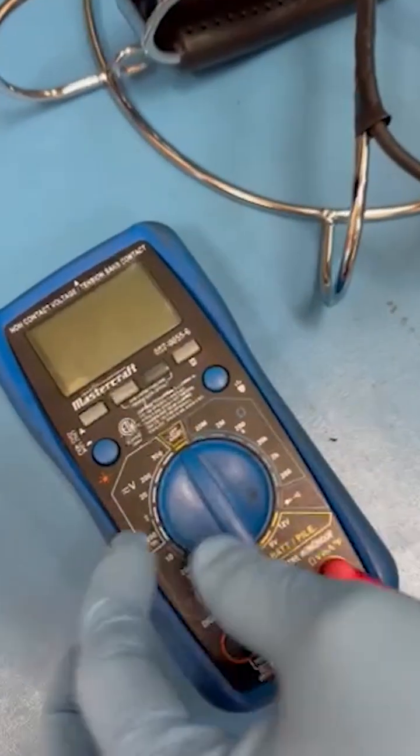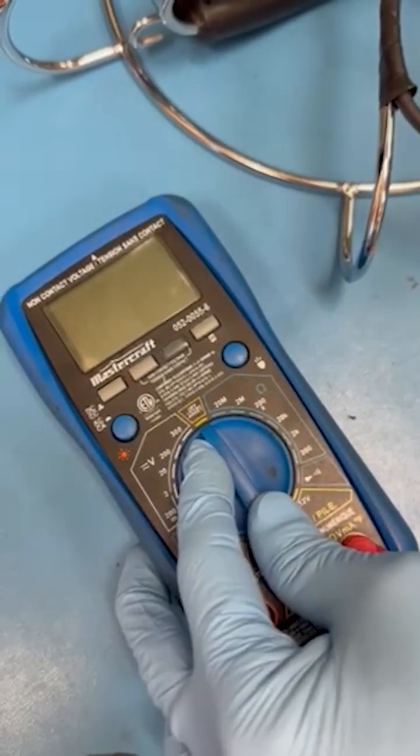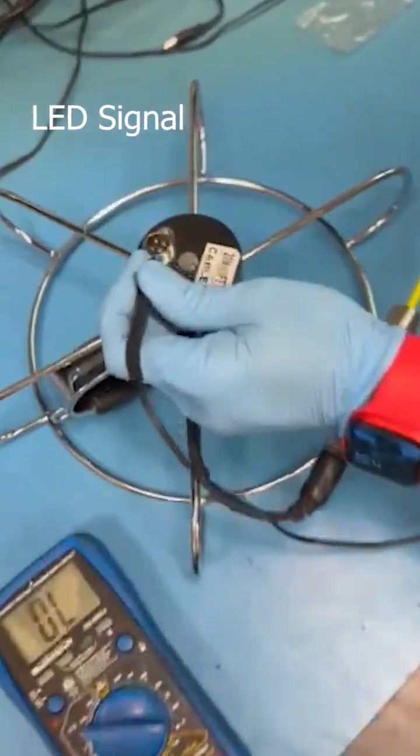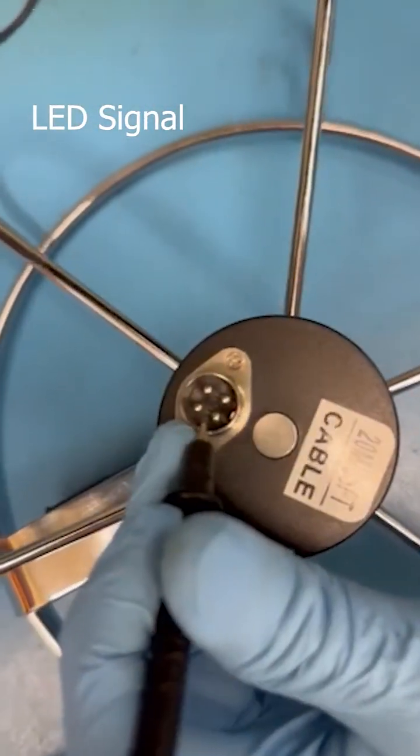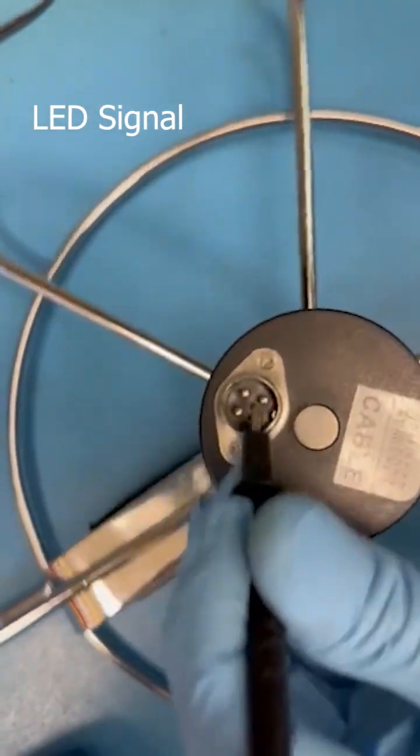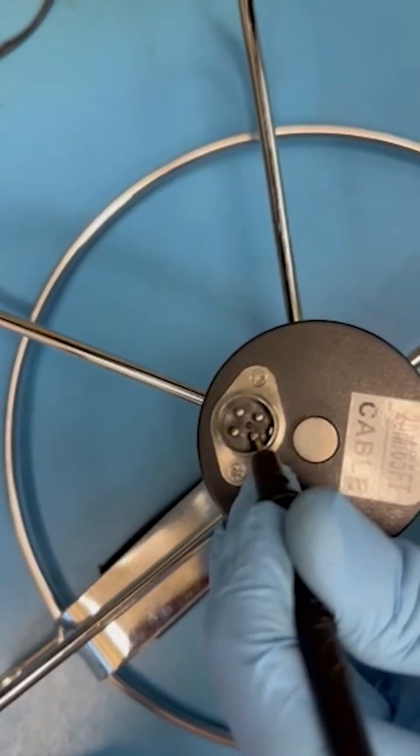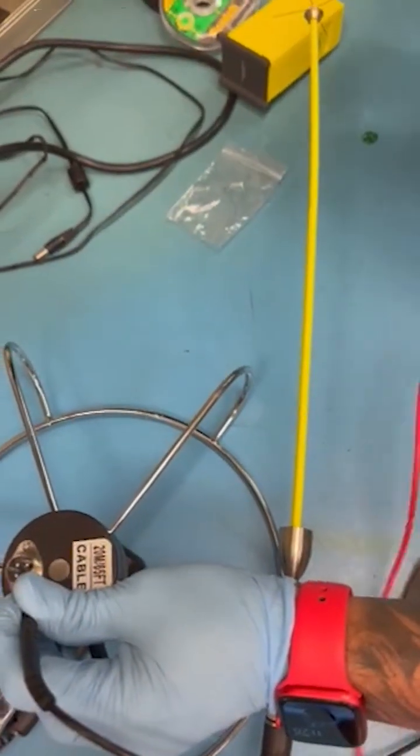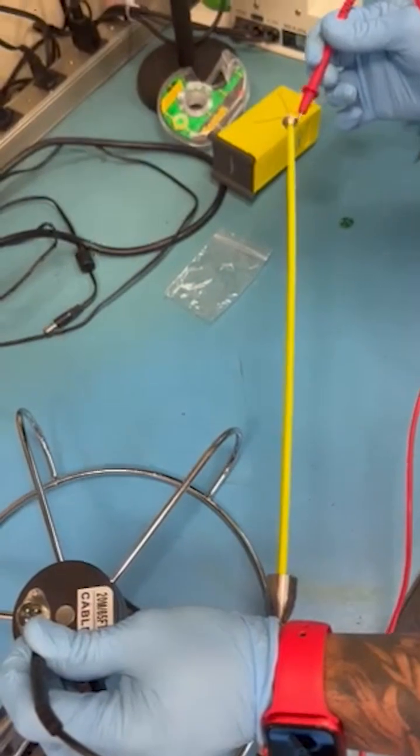Turn on your multimeter and put it on continuity. Now always check on the cable lead signal. So this is the lead signal on pin number 4. Once you find the signal, just put a mark on the cable so we know which one has signal.